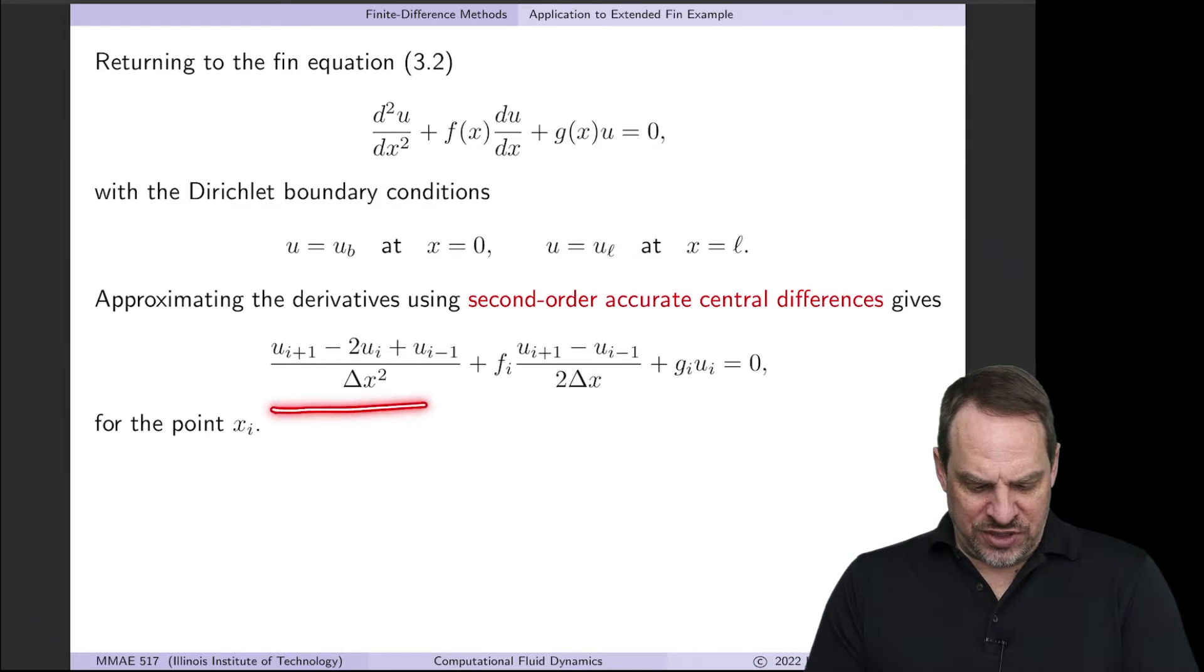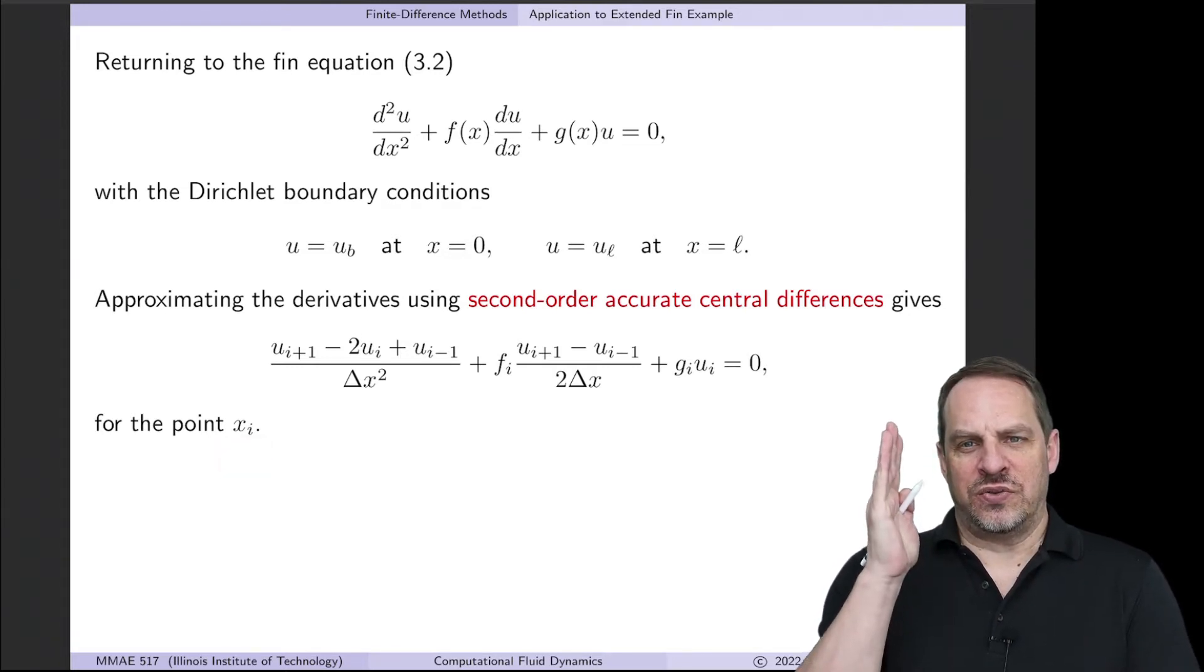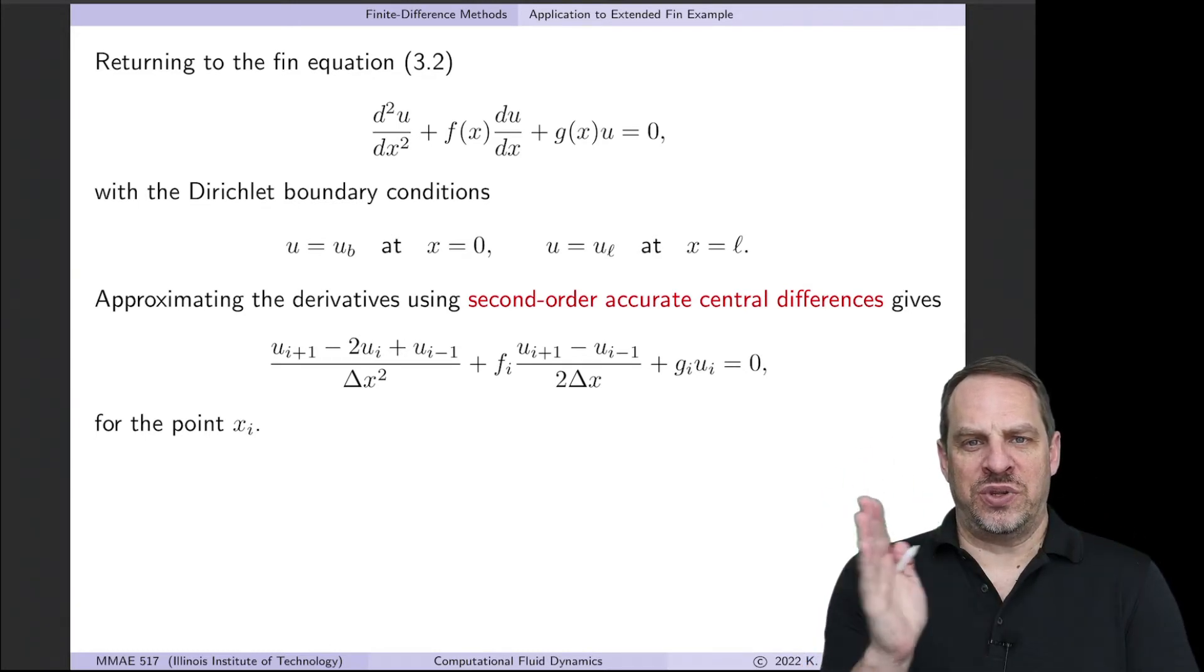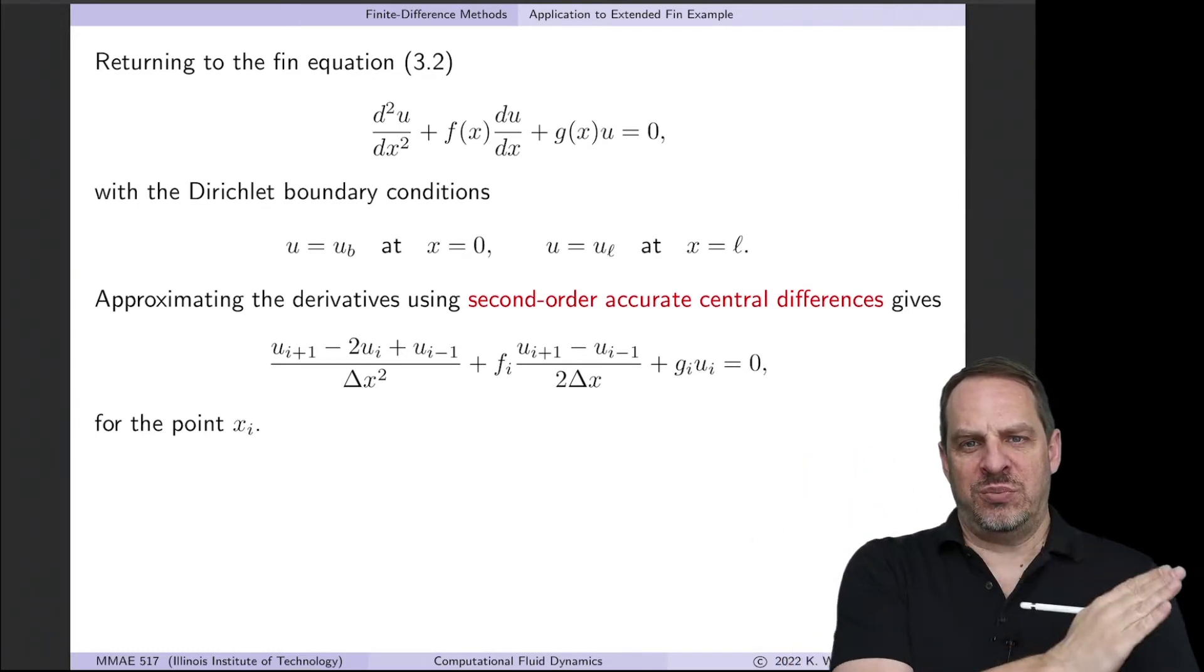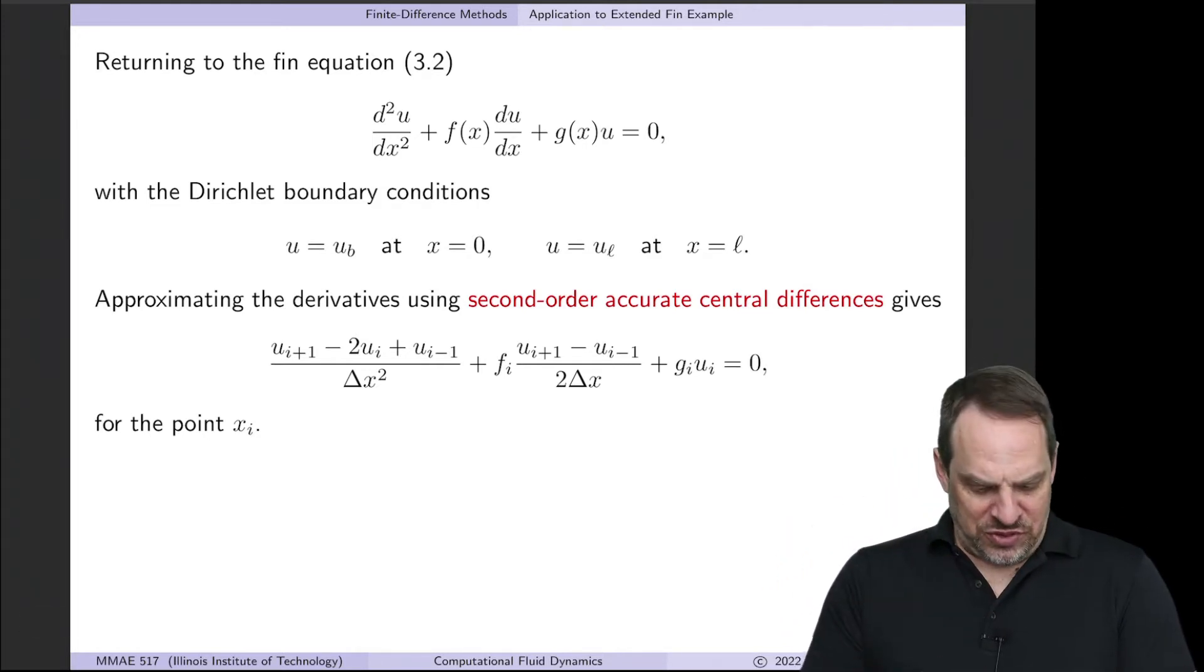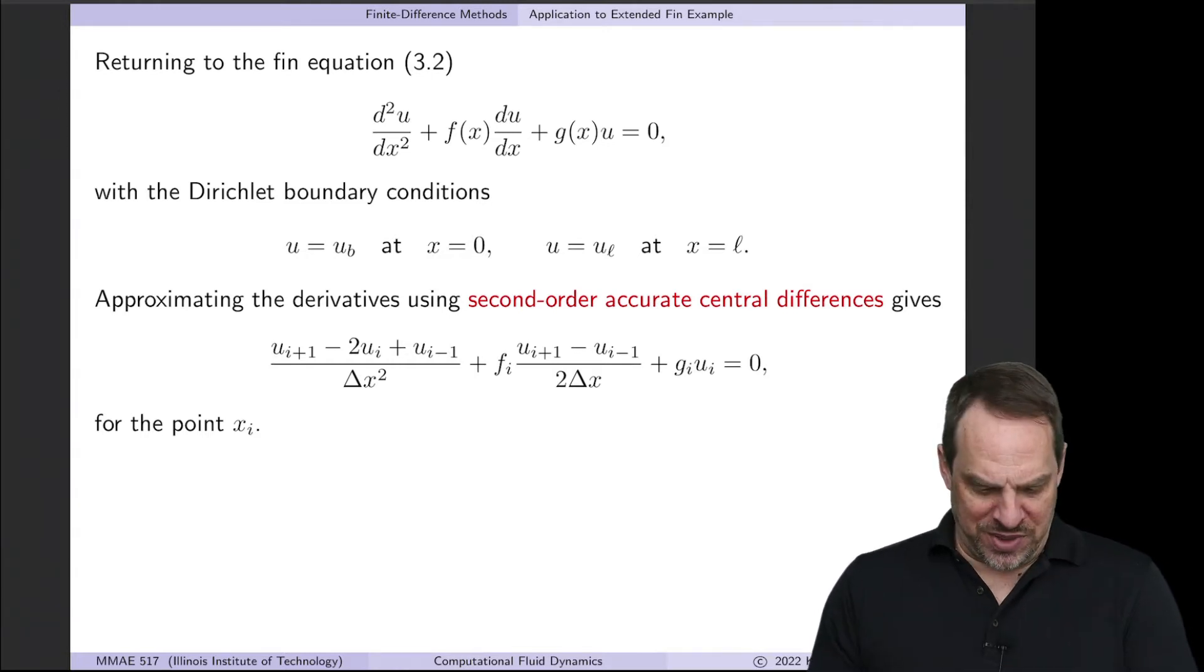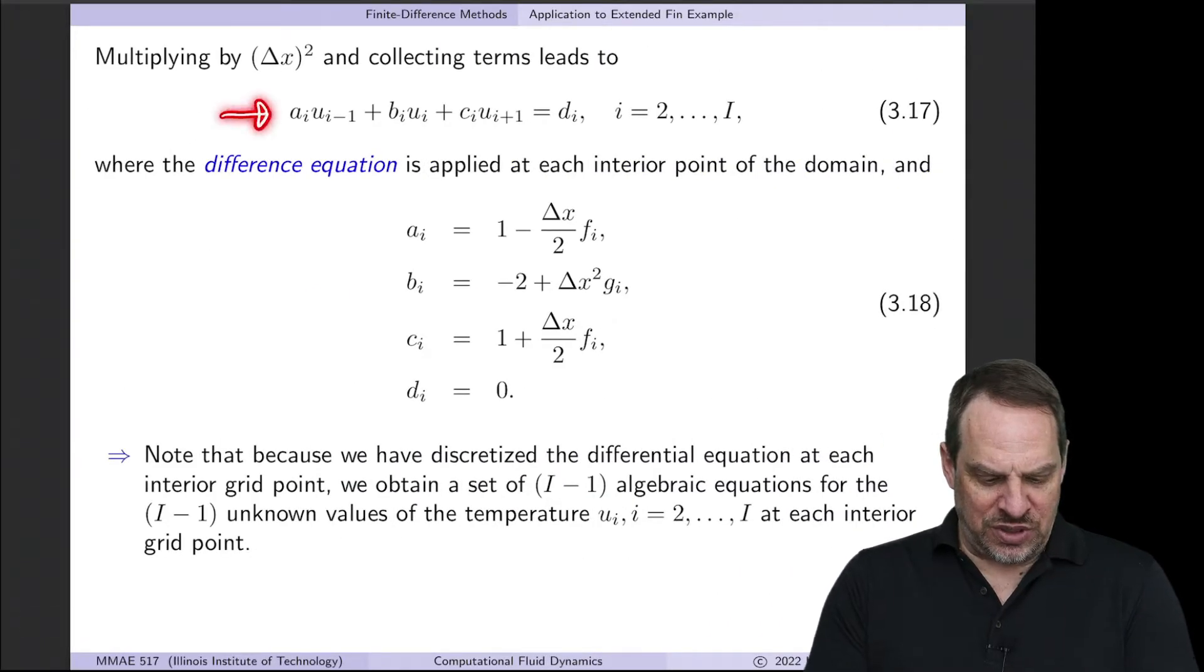Okay, so now we have the discretized version of our governing equation. We call this the finite difference equation. And it applies at each point x sub i, where i goes from 2 to capital I, all the interior points within the domain. We know the temperature at the end points, at the boundary values. So we're just applying this at the interior points. Now you notice some of these are repeated. So here's a ui plus 1, here's a ui plus 1. So let's gather together everything times ui plus 1, everything times ui, and everything times ui minus 1. When we do that, we get this expression here. Now I've also multiplied through by delta x squared for reasons that I'll discuss in a moment.